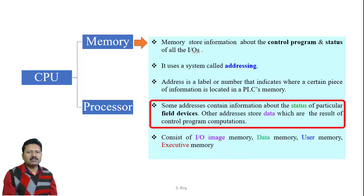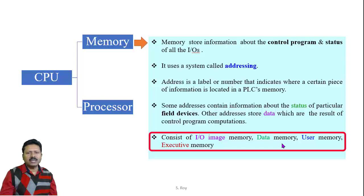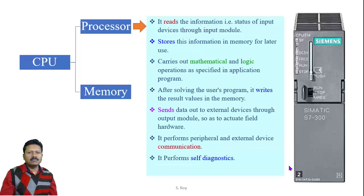Some address contents contain information about the status of a particular field device, and other addresses hold data that is the result of different control program computations. According to function, memory may be classified as input/output image memory, data memory, user memory, and executive memory. Input/output image memory holds the status of input and output devices. Data memory holds the results of different arithmetic computations. User memory holds user-defined programs, and executive memory is mainly for the operating system of the PLC.